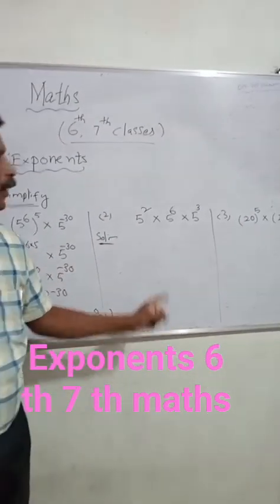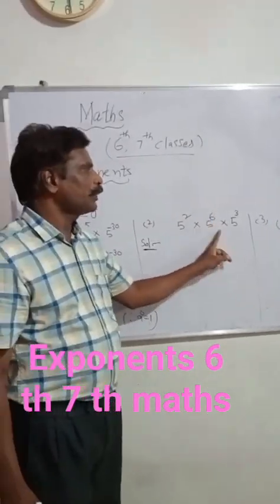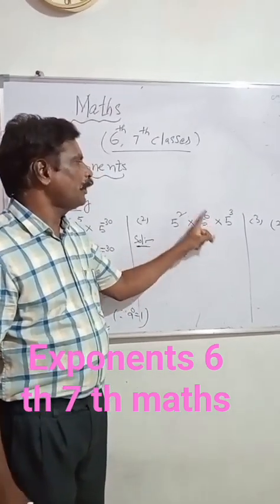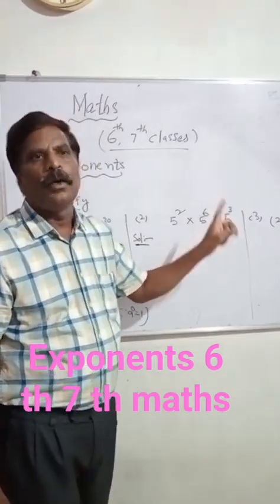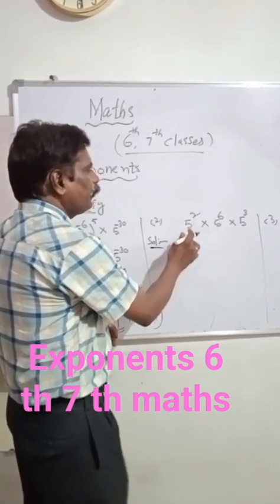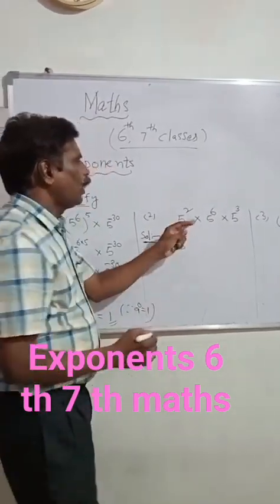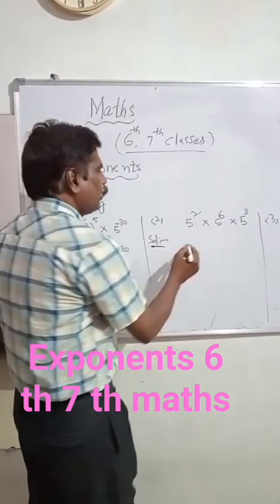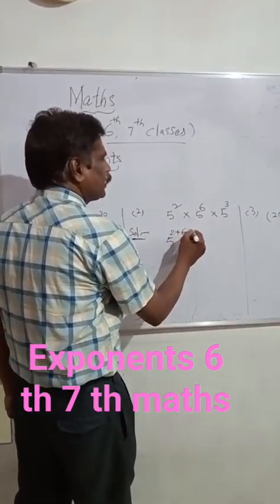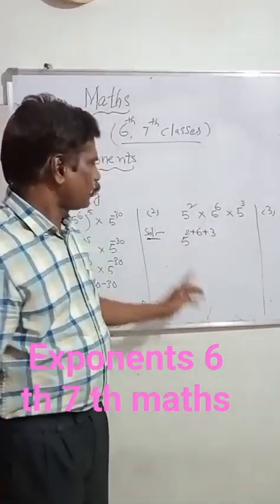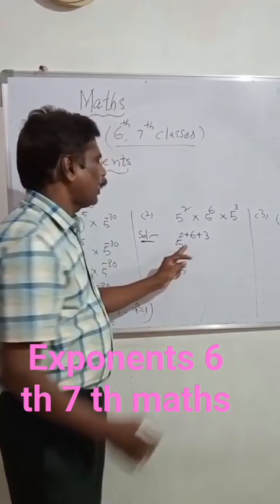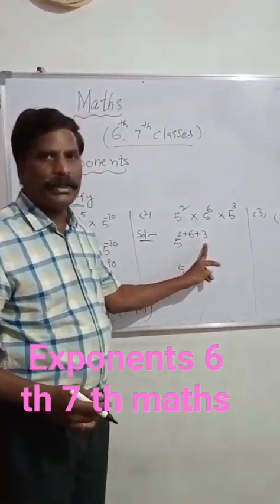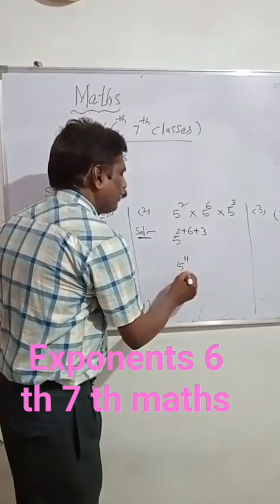Next, the second problem the same way: pi squared into pi to the power of 6 into pi to the power of 3. It follows the model a to the power of m into a to the power of n into a to the power of p. Since the bases are equal, add the powers: 2 plus 6 is 8, and 8 plus 3 is 11. So the answer is pi to the power of 11.